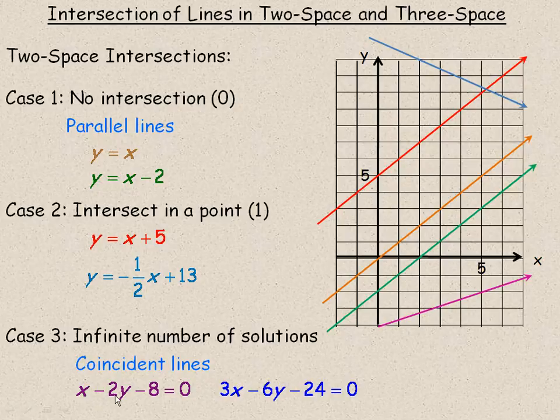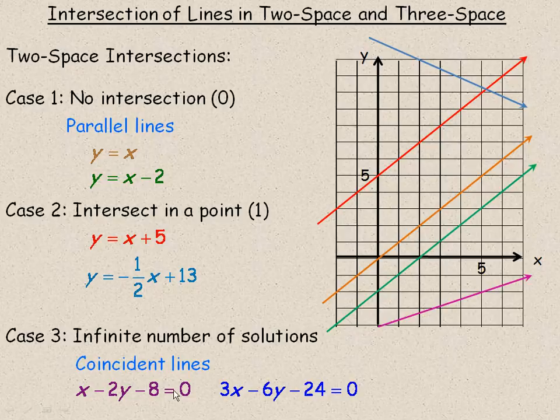So for example, x minus 2y minus 8 equals 0, that's the standard form. We could rearrange it in y equals mx plus b or slope y-intercept form if you wanted to. That's this line right here.